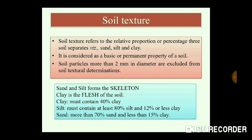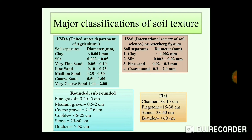Let us talk about the major classifications of soil texture. There are a number of classifications, but we will focus on two major ones. The first is the USDA classification — United States Department of Agriculture. The second classification was given by ISSS — International Society of Soil Science — also known as Atterberg's classification.